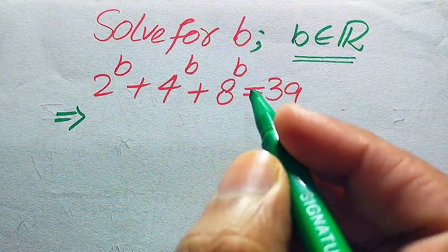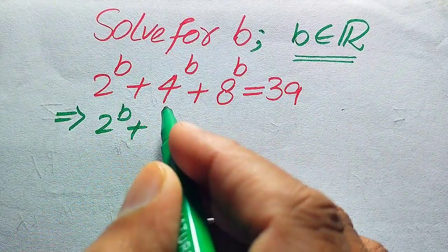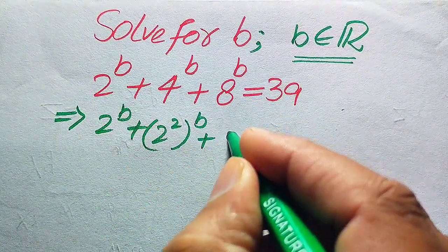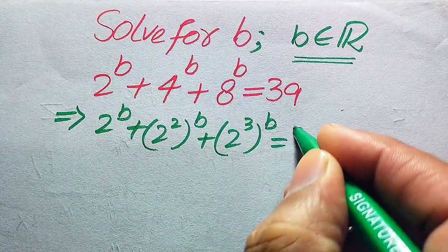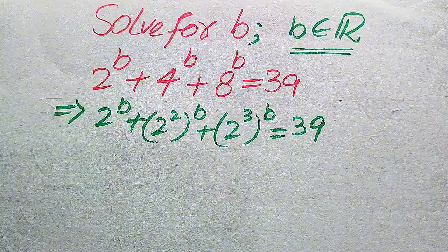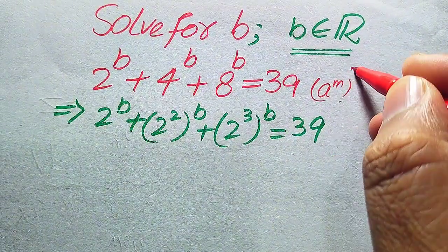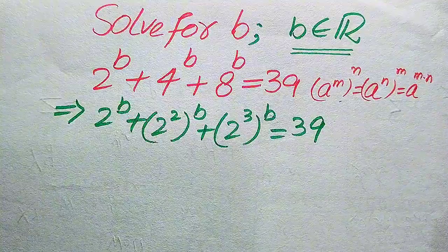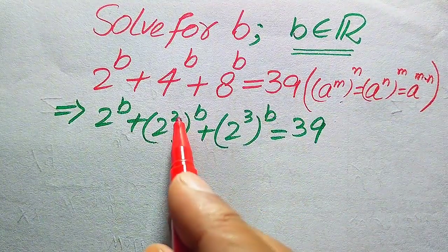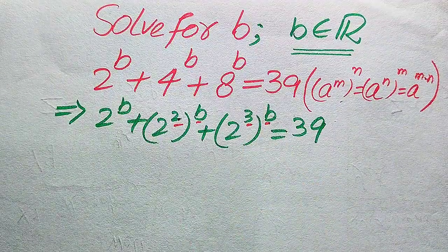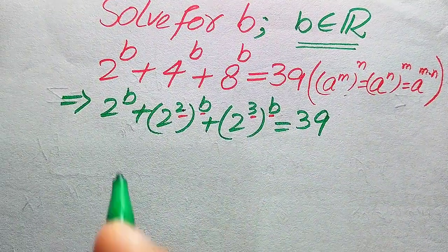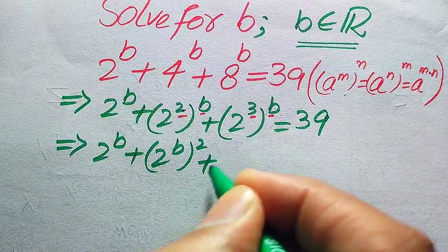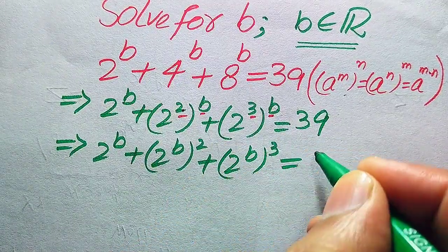The first thing we do is rewrite this equation. We write 4 in the form of prime factors: 4 equals 2 squared, so we have 2 squared to the power of b. The prime factors of 8 are 2 cubed, so we have 2 cubed to the power of b, and this equals 39. We use the exponential law: a to the power of m to the power of n equals a to the power of m times n. After interchanging the exponents, this becomes 2 to the power of b, plus 2 to the power of b squared, plus 2 to the power of b cubed, equals 39.